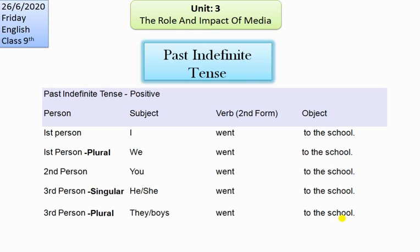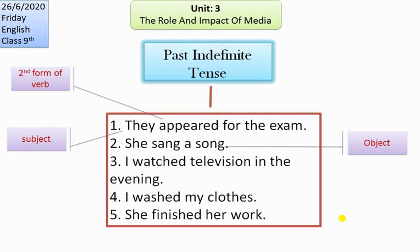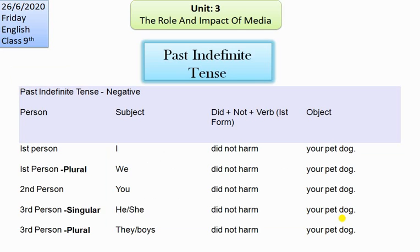For first person plural, we say 'We went to the school.' Here are more examples of positive sentences: 'They appeared for the exam,' 'She sang a song.' In the same way, we have subject, second form of verb, and then object.